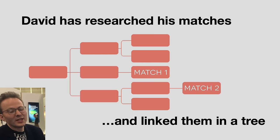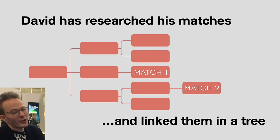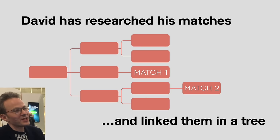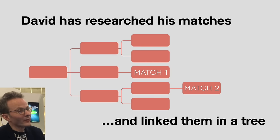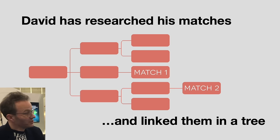For his two big matches, David has figured out who their common ancestors are — one match has a grandparent couple and the other has a great grandparent couple as their common ancestors. Now he has a tree, and because of his genetic link to these people he knows that tree also connects to his own tree — he just doesn't know how yet. That's what this tool is for.